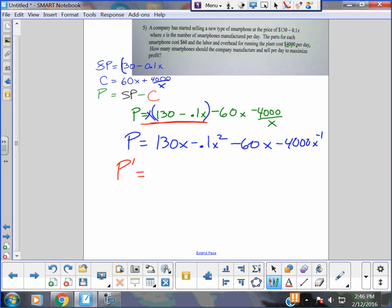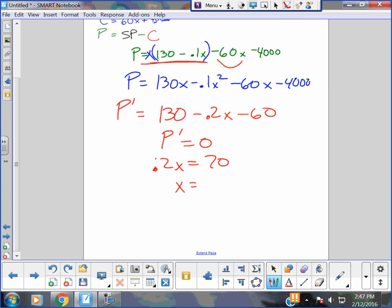I got to bring x in. I think I get 130x minus 0.1x squared minus 60x minus 4000. That was the cost for all the phones. The selling price of all the phones, the cost of all the phones. And I still don't think we need to do over x. I think that's a mistake now too, because all the phones cost 4 grand, right. And I get 130 minus 0.2x minus 60. That seems a lot better. For P prime equals zero, I get 0.2x equals 70. And I take 70 divided by 0.2. And I get x is 350 phones a day.